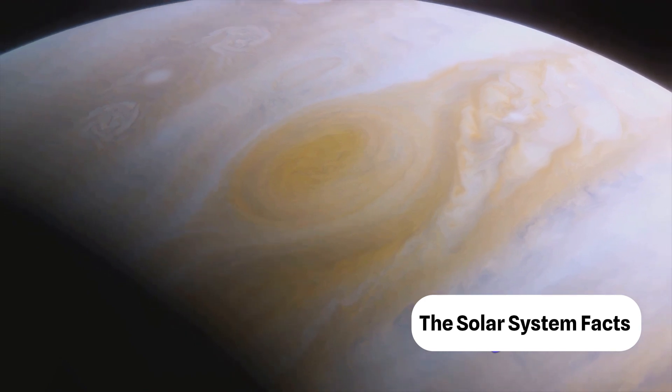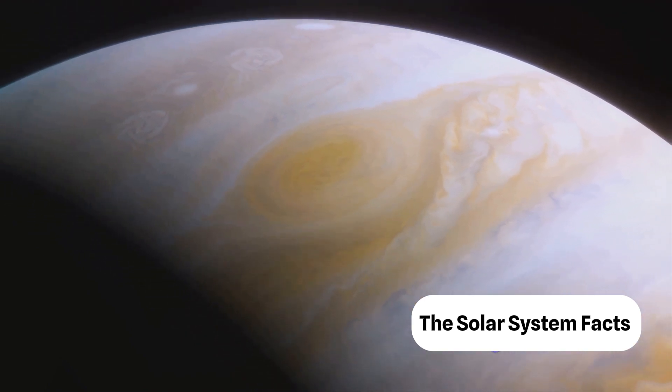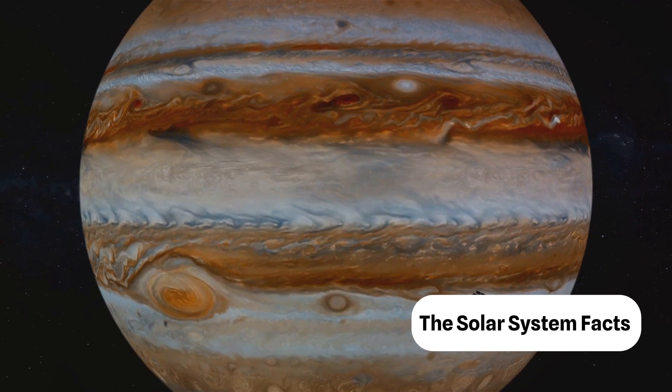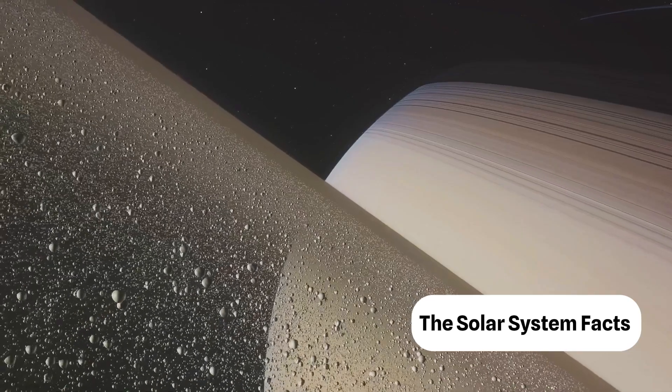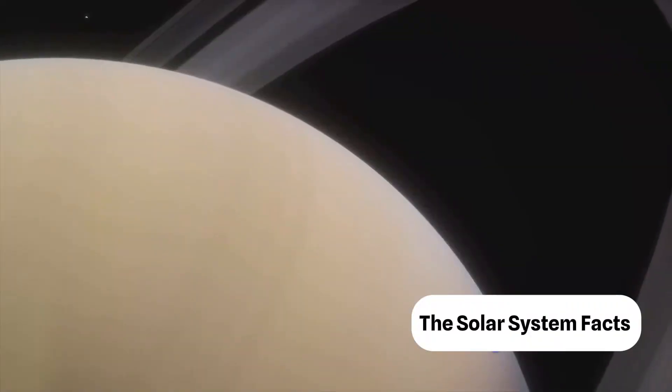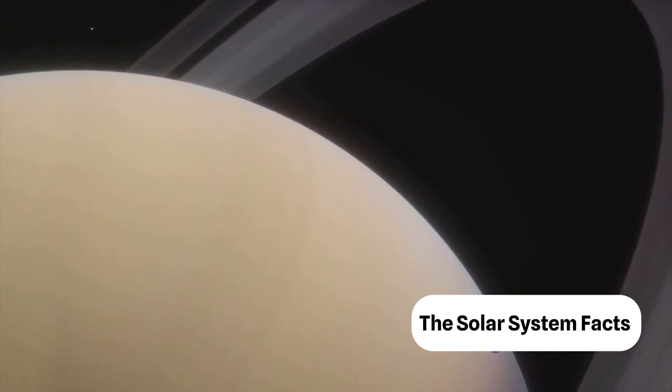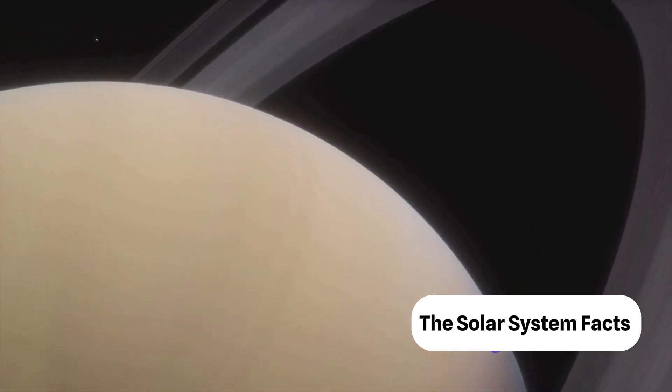Jupiter, the largest planet, is more than a thousand times the volume of Earth. Its colorful bands and swirling storms are a sight to behold. Saturn with its iconic rings is next. These rings are made up of countless particles of ice and rock orbiting the planet like a disk.